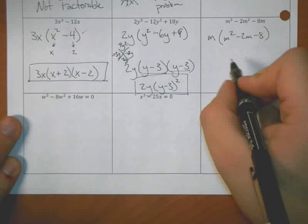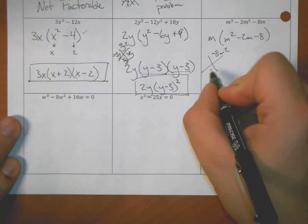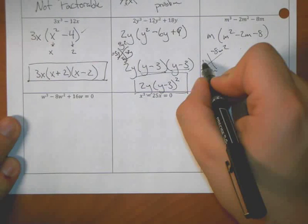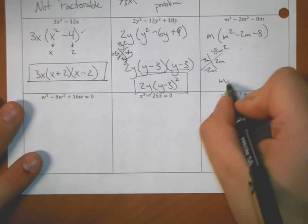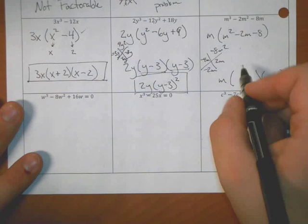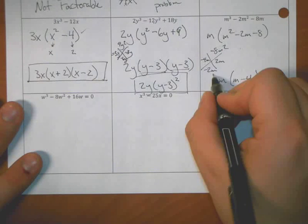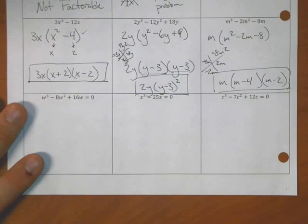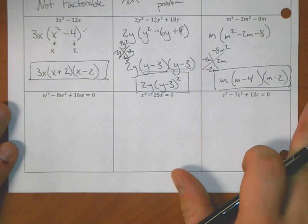I'll quickly use this one. m is in common. m squared minus 2m minus 8. negative 8m squared minus 2m. I think negative 4m and 2m. Again, leading coefficient is 1, so I have a shortcut. m times m minus 4 times m plus 2.